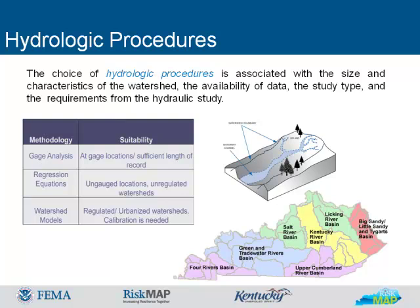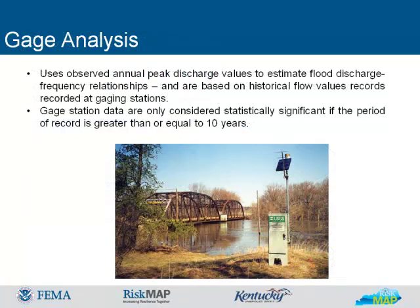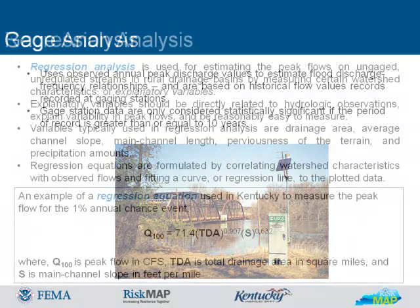HUCs are commonly known as watersheds. The boundaries of risk map study areas are defined by watersheds. Gauge analysis uses observed annual peak discharge values to estimate flood-discharge frequency relationships and are based on historical flow values records recorded at gauging stations. Gauge station data are only considered statistically significant if the period of record is greater than or equal to 10 years.